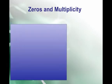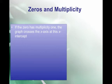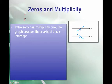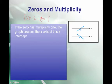Let's talk a little bit about zeros and multiplicity. If the zero has multiplicity 1, the graph crosses the x-axis at this x-intercept. So let me write my polynomial in factored form: x minus 2, times x minus 1 squared, times x minus 4 cubed. Multiplicity 1 is the power on the factor.